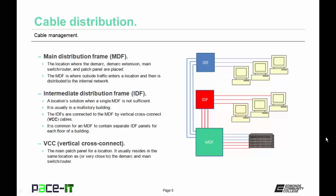A vertical cross connect is the main patch panel for a location. It usually resides in the same location or very close to the DMARC and main switch or router.